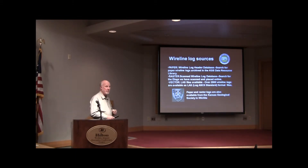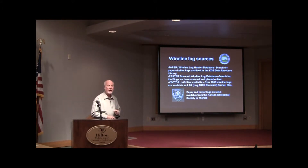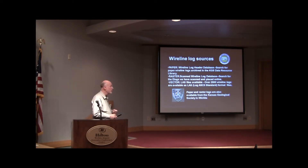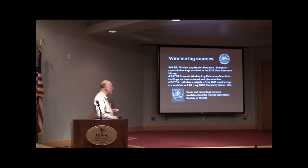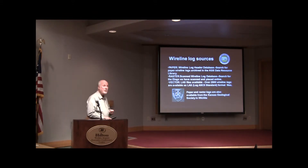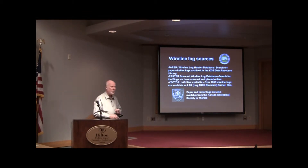Then we go into electronic files, which have two basic kinds. One is raster — simply scanned wireline logs, the electronic form of the paper record, similar technology to a fax machine. For people who actually analyze logs, we prefer what is technically called vector, and these are the LAS files we'll be talking about. A large number of files are already available on the Kansas Geological Survey website, and also down here at the Kansas Geological Society — both paper and raster logs are available.